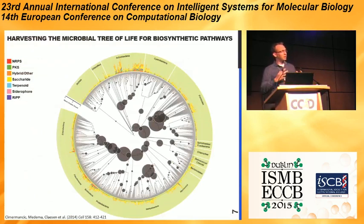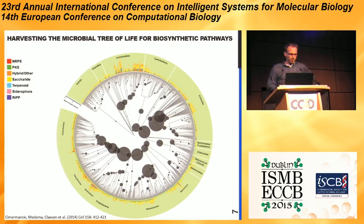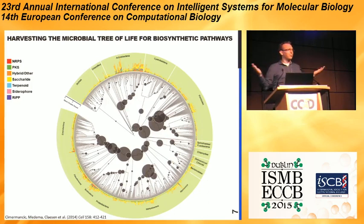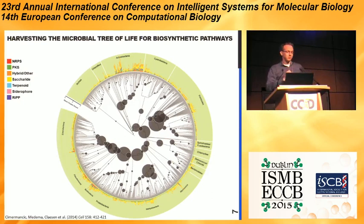We used this algorithm on 1,154 complete prokaryotic genomes across the microbial tree of life, both archaea and bacteria. We found more than 10,000 biosynthetic gene clusters, among which were thousands not detected using the original version of antiSMASH. You can imagine that if you find more than 10,000 biosynthetic gene clusters, where do you actually start with analyzing that? Because there are so many, and in the end you want to get to specific molecules — that was a really difficult challenge for us.